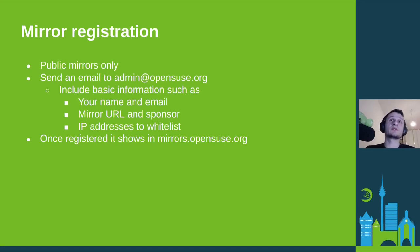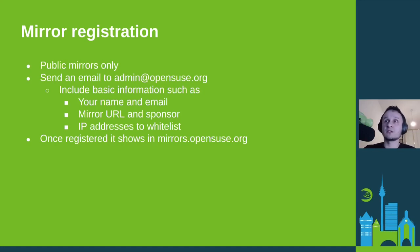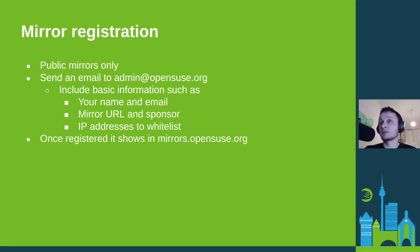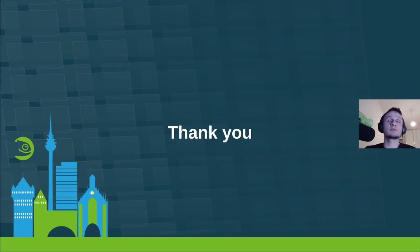Mirror registration is fairly simple — you just need to send an email to admin@opensuse.org and include some basic information: your name and email in case we need to contact you, your mirror URL so users can fetch data from it, who is sponsoring the mirror — often companies or universities — and of course IP addresses to whitelist. And that's basically it — thank you and I hope you enjoyed this short presentation on how to become an OpenSUSE mirror.